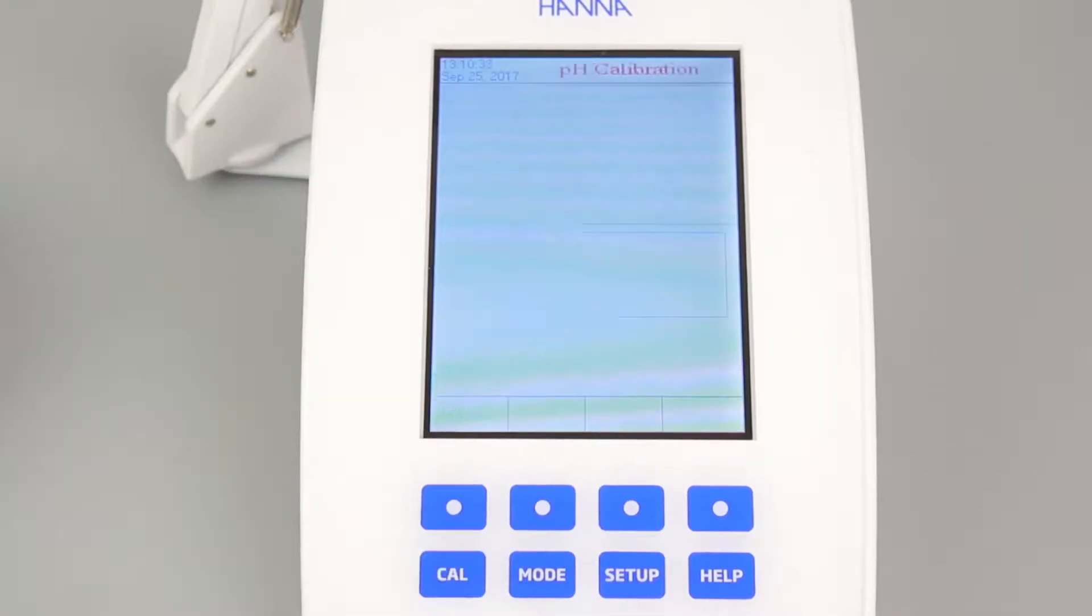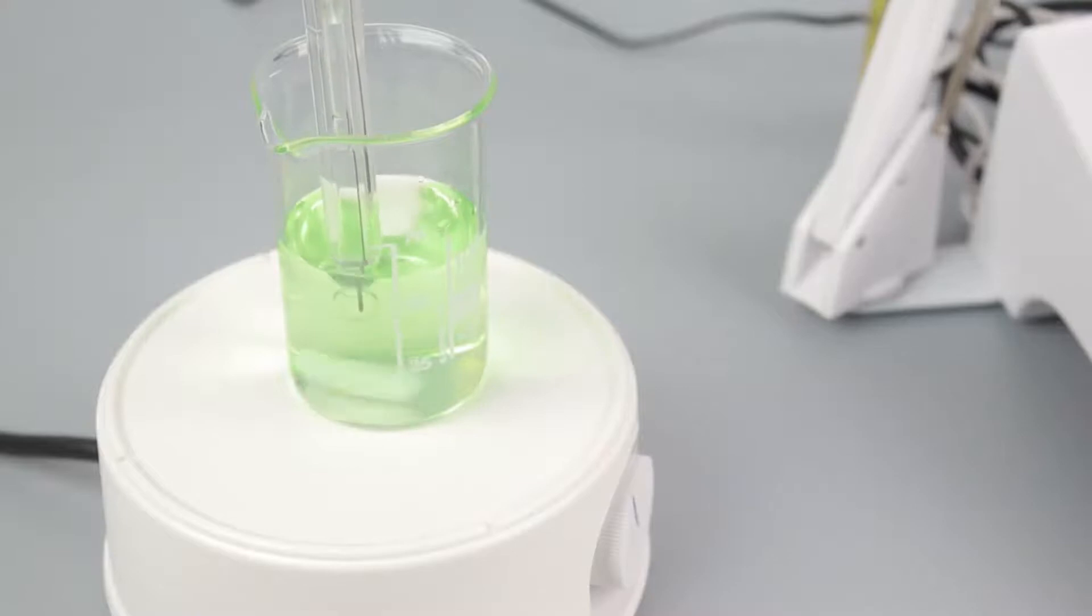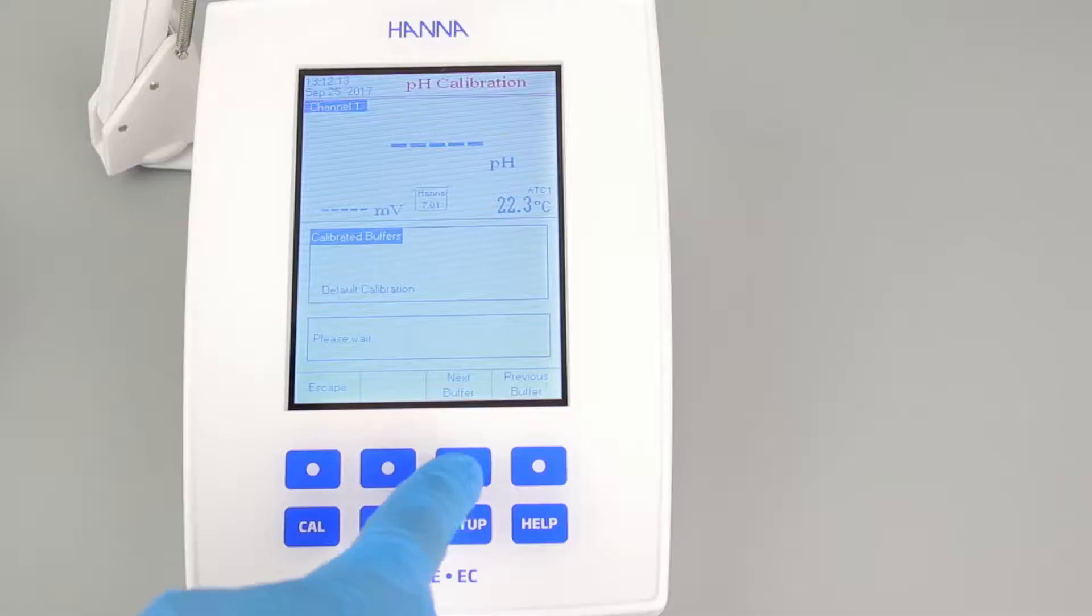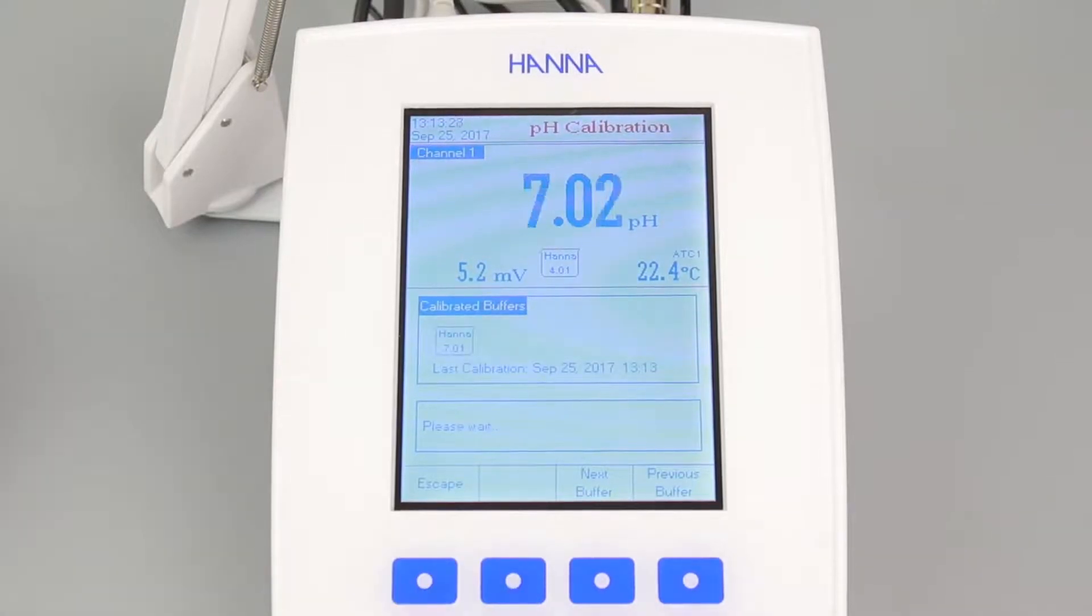To calibrate your meter, press the CAL button. Then place the pH electrode into your buffer. Make sure the sample is stirring. Use the next buffer and previous buffer buttons to match the value you're using. Once stable, press accept and the calibration will be saved.